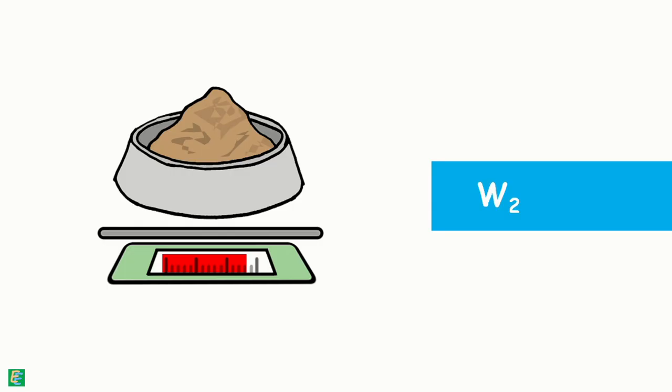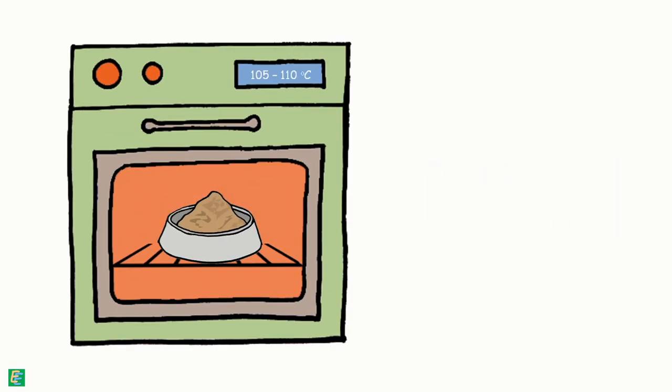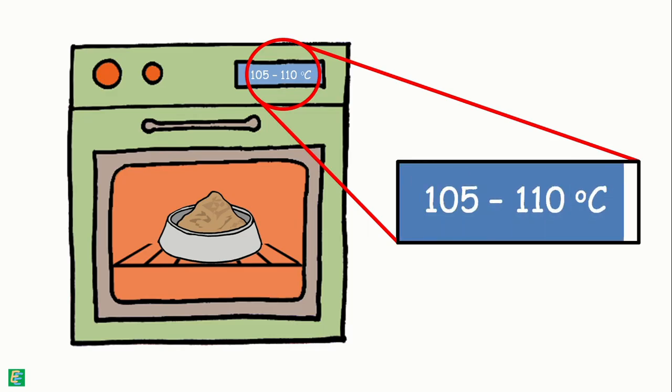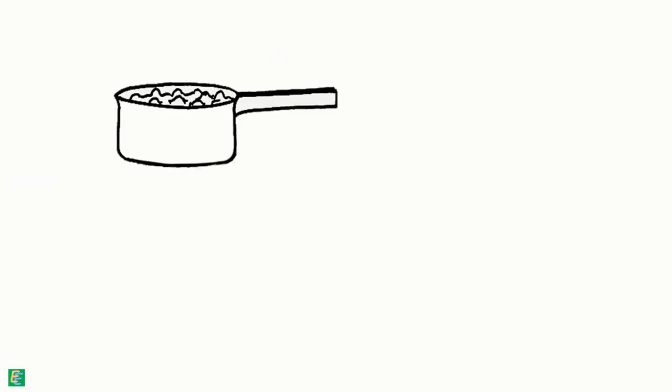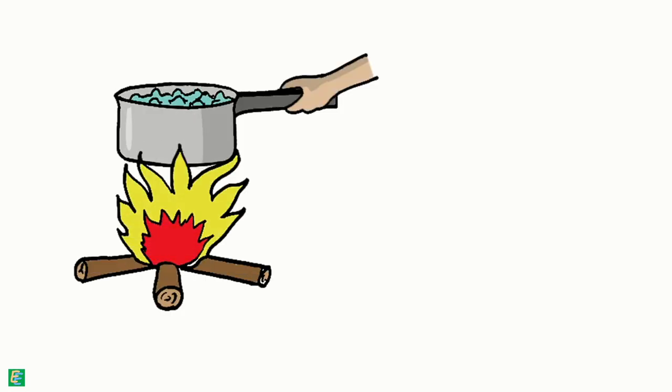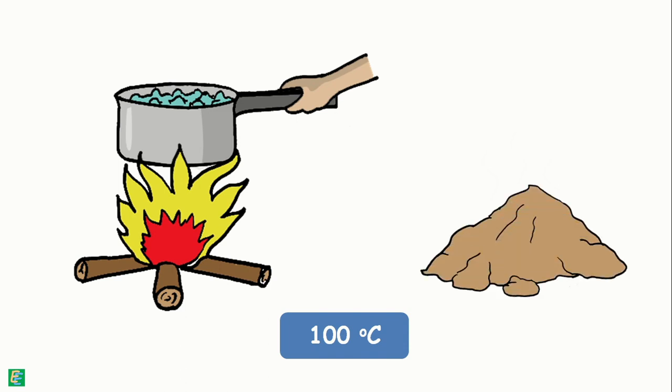Now place the container into the oven at a controlled temperature of 105 to 110 degrees centigrade. We maintain this temperature because water boils and vaporizes at 100 degrees centigrade, and we want the water present in the sample to escape out.